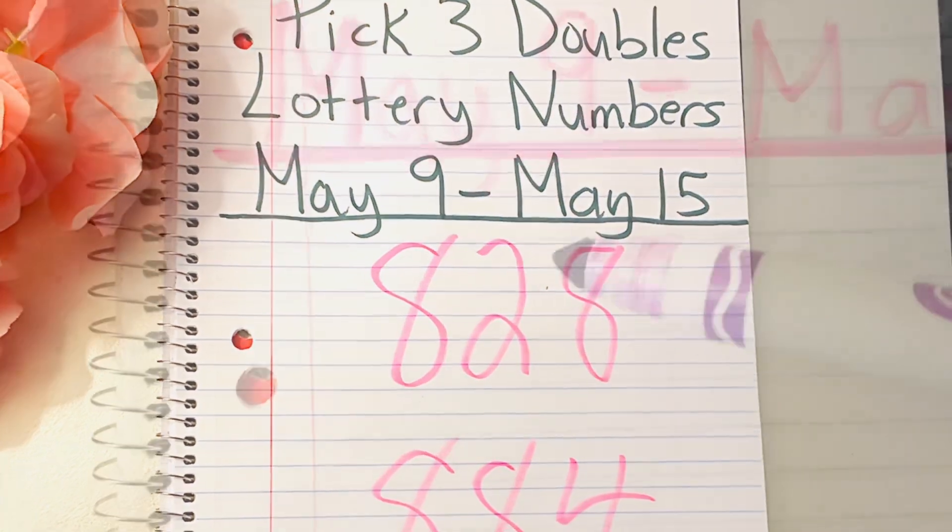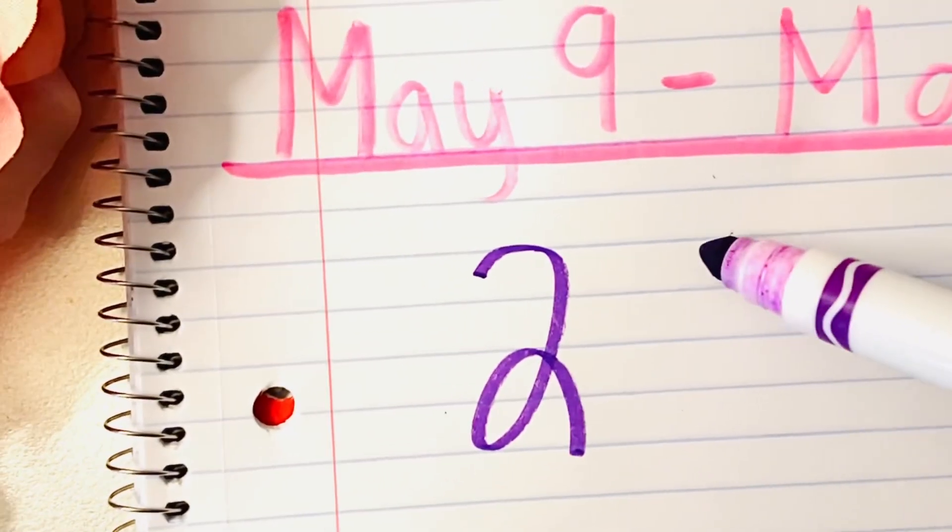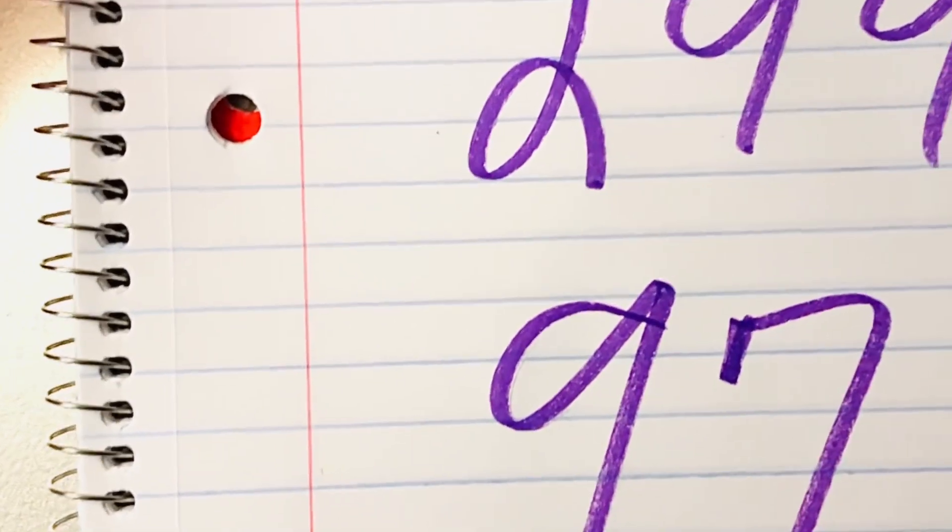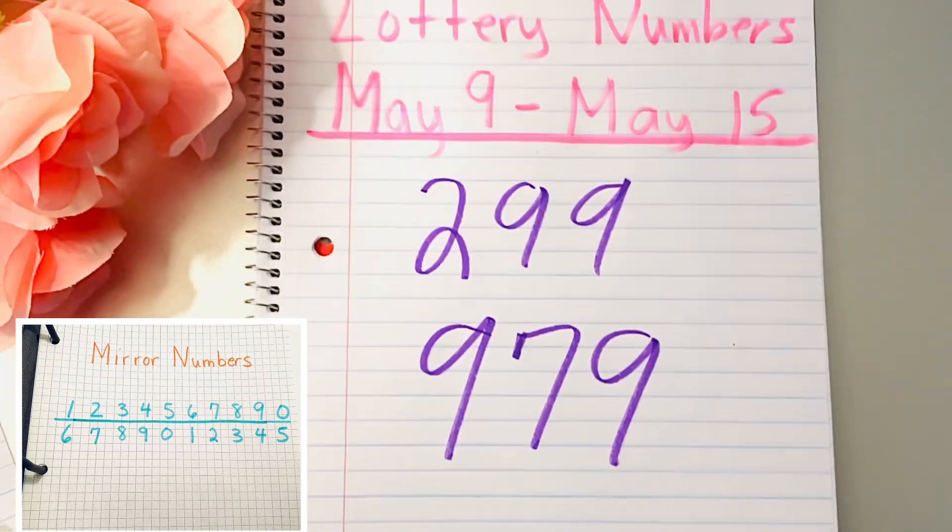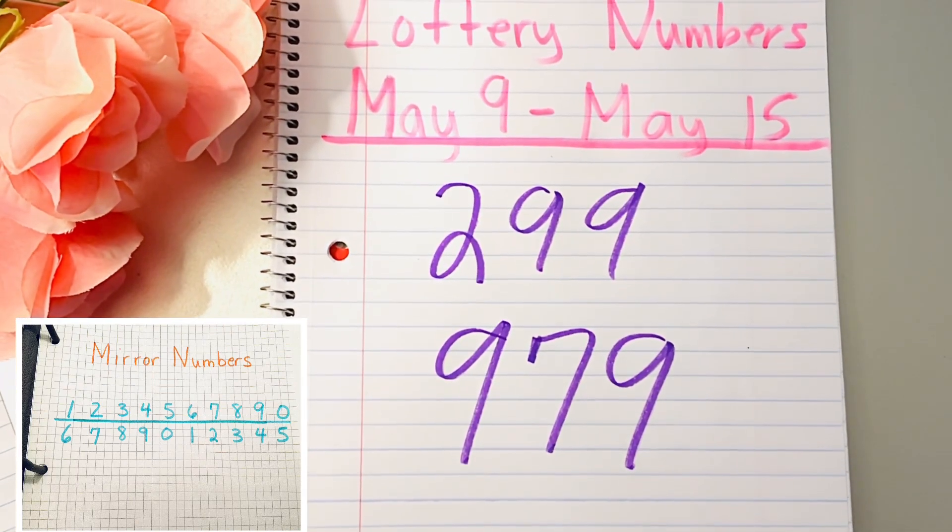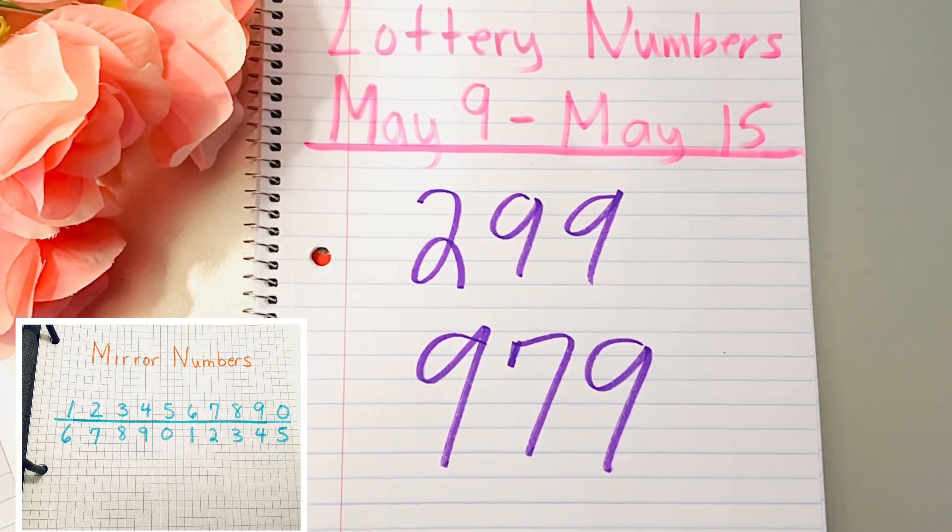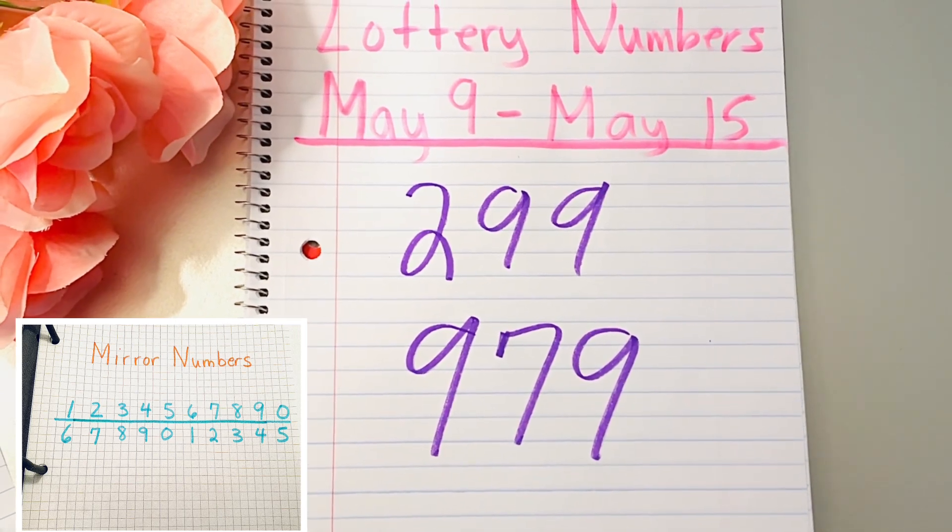Now we have the double nines: 299 and 979. Okay, so if nines are hot, pick the nines. Again, 2 and 7 are mirror numbers of each other. The 2 is a 7 and 7 is a 2. So if you play 299, you should consider playing 979 as well.